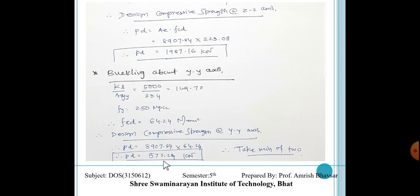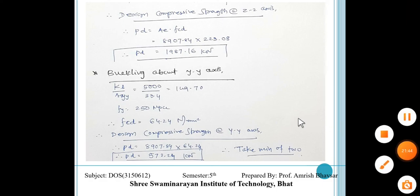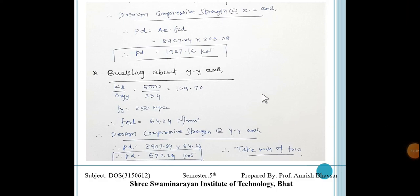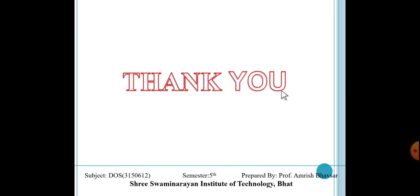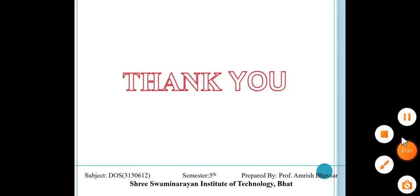The governing design compressive strength is the smaller of the two values: PD = 572.24 kN, controlled by buckling about the YY axis. A higher KL/R means higher slenderness ratio, which reduces FCD and thus compressive strength. This is very important for steel structure design. We will discuss further examples in the next lecture. Thank you very much.